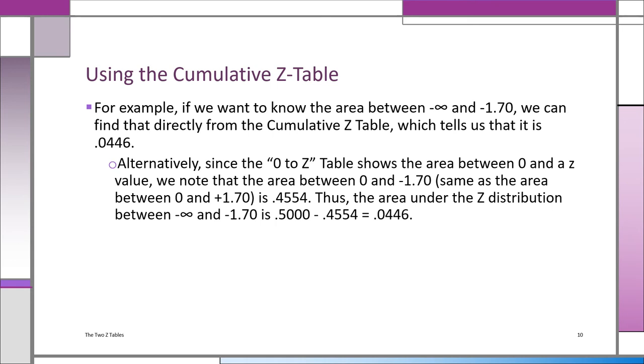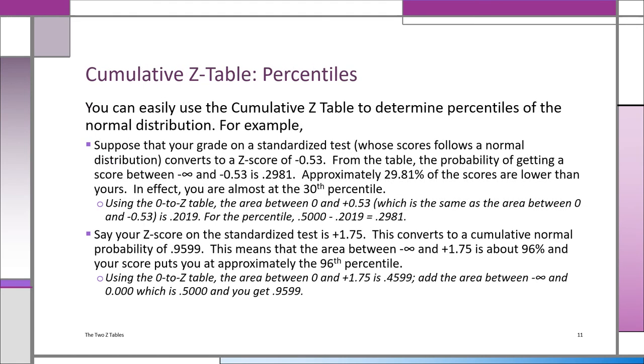Obviously, it's a lot easier to use the cumulative Z table for this kind of problem. The problems in normal distribution probabilities involving percentiles are truly easier to do with the cumulative Z distribution table because it's already in the form that you want. It's in the form of percentiles, negative infinity to a Z value, as opposed to having to do subtraction, subtracting from 0.5 and getting the tail probability.